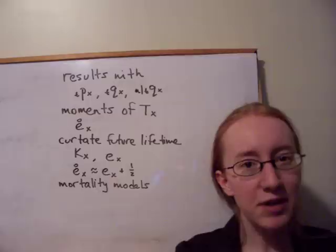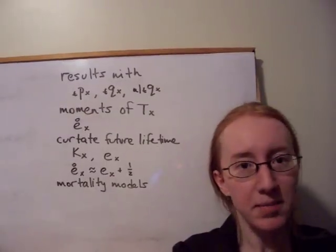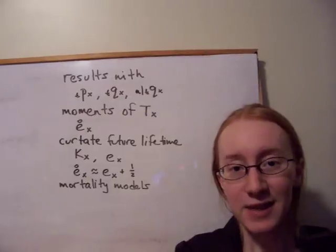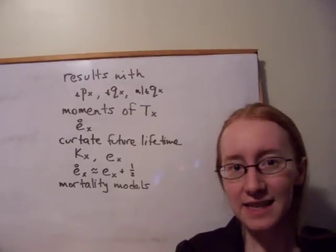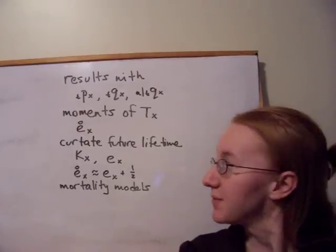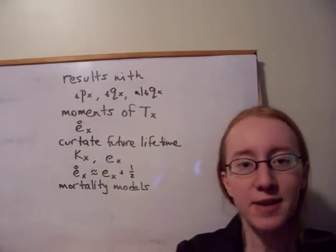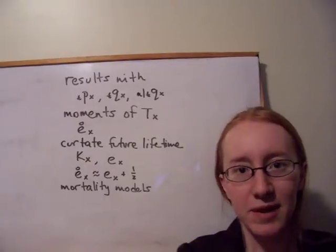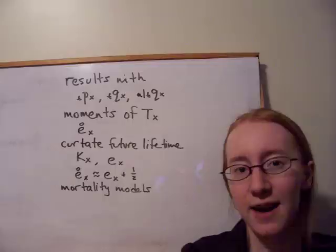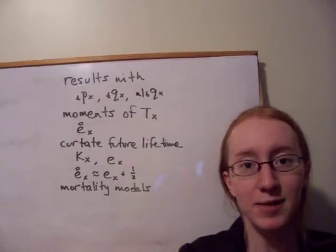Because it's a discrete random variable, it doesn't have a probability density function anymore, it just has a probability function. The probability of KX equaling a certain value K is just K deferred 1QX. We developed results for what the cumulative distribution function and survival function look like for this discrete random variable KX.